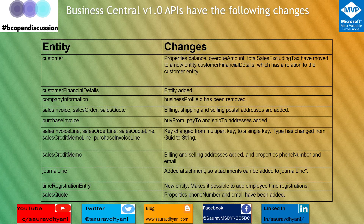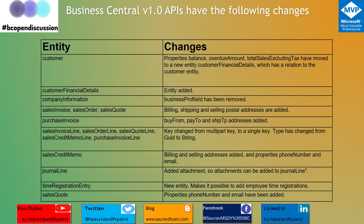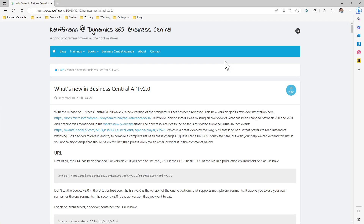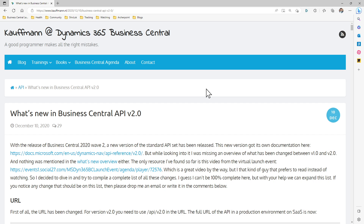There's a list of changes between beta and v1.0 on different entities, coming from Microsoft's MSDN documentation. If you're on beta and want to update to v1.0, these are the changes you need to account for in your API calls. As for upgrading from v1.0 to v2.0, AJ has written a detailed blog about what's new in API version 2.0 — I'll put the link in the description.